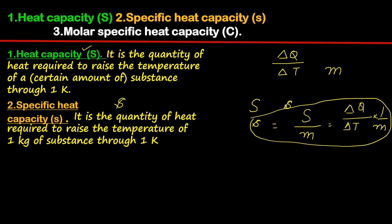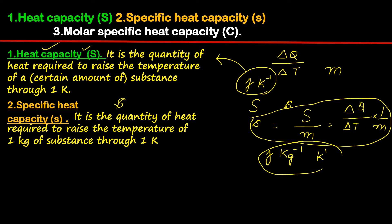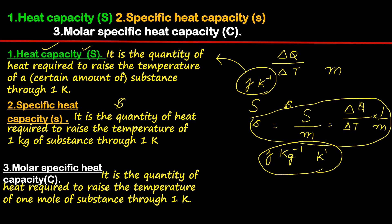The unit of heat capacity is joule per K, since heat is energy in joules and only temperature is considered. When we come to specific heat capacity, it becomes joule per kilogram per K. That is the unit of specific heat capacity.